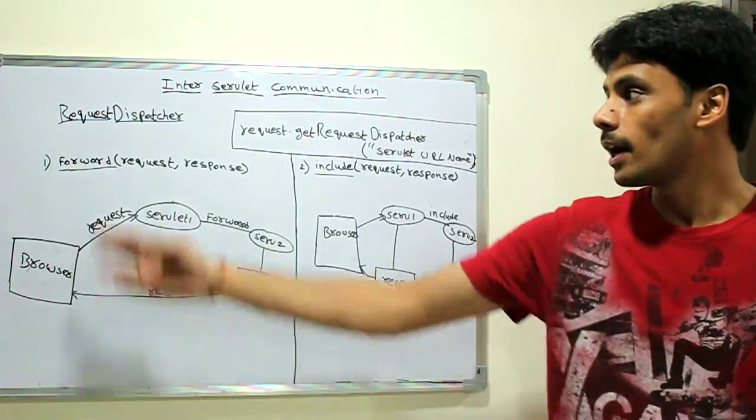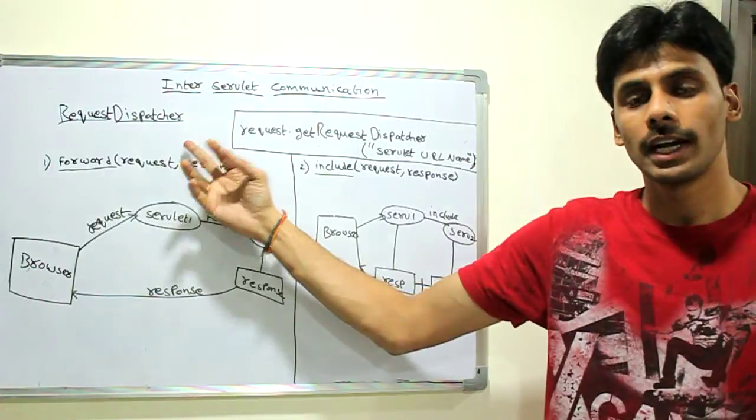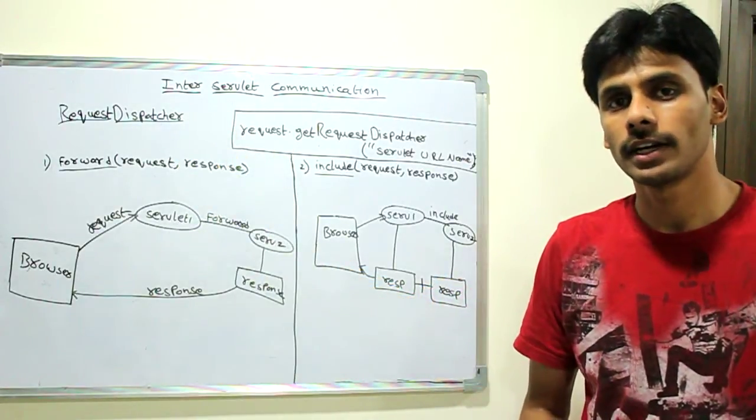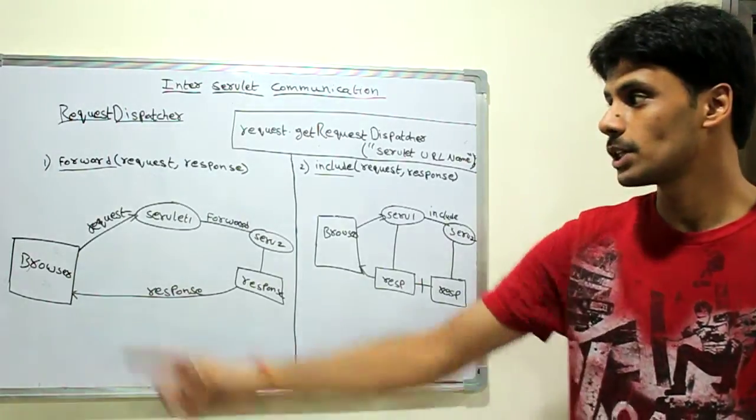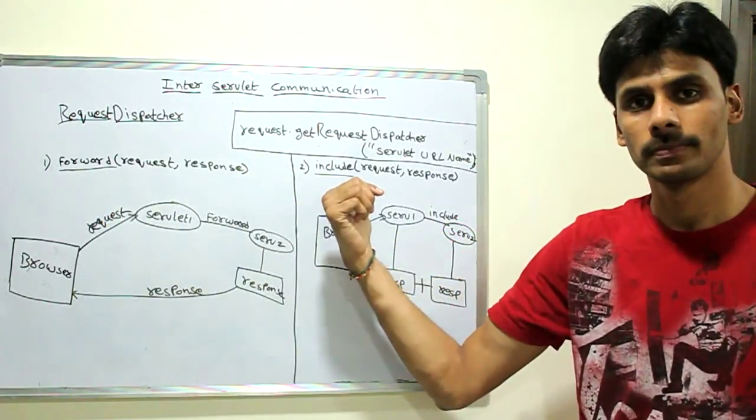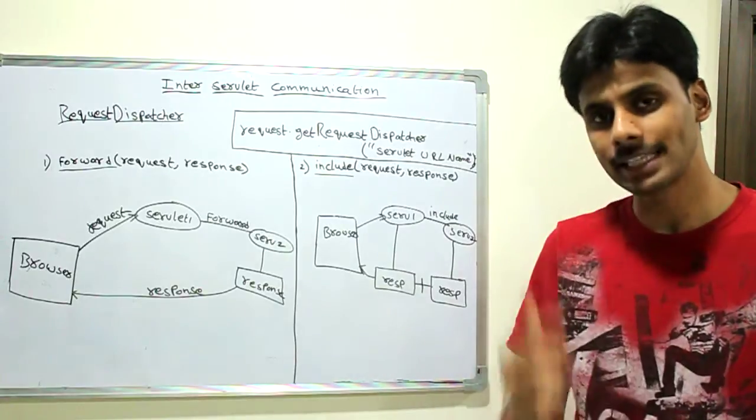By the end of it, you will learn how to use the request dispatcher interface that is available in the Java servlet API, and to do request dispatching using two mechanisms, forward and include. So let's get started by looking at the examples.